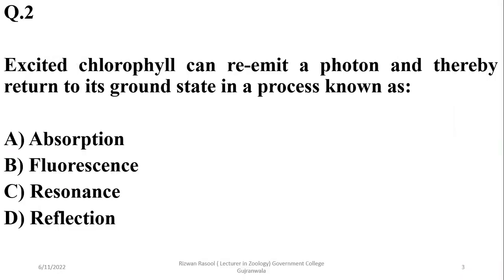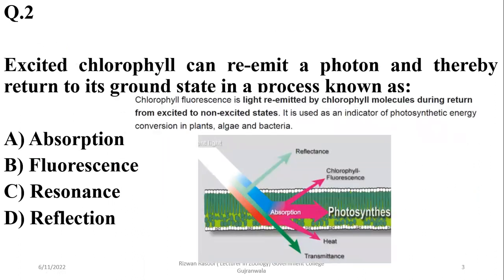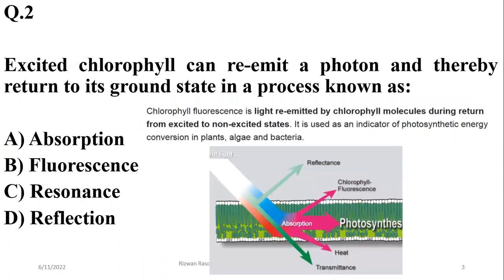Question two: An excited chlorophyll can re-emit a photon and thereby return to its ground state in a process known as fluorescence. Chlorophyll fluorescence is light re-emitted by chlorophyll molecules during return from excited to non-excited state. This is associated with photosynthesis.